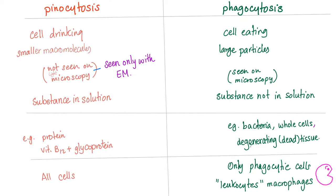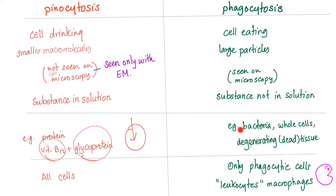Comparing pinocytosis and phagocytosis: pinocytosis involves smaller macromolecules that are not visible on light microscopy, and the substances are in solution — dissolved like salt in water. Phagocytosis involves larger macromolecules or particles that are visible on light microscopy, and the substances are not in solution. Examples of pinocytosis include proteins, vitamin B12, and glycoproteins. Phagocytosis handles larger things such as bacteria, whole cells, degenerating tissue, and dead tissue.